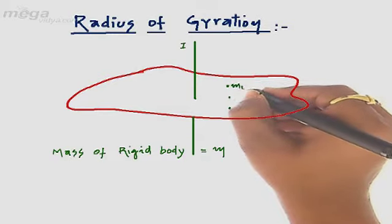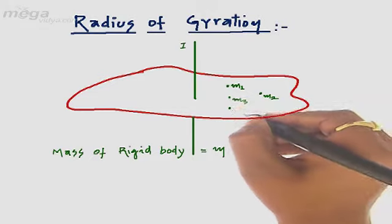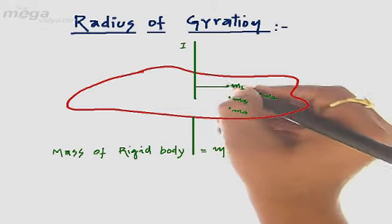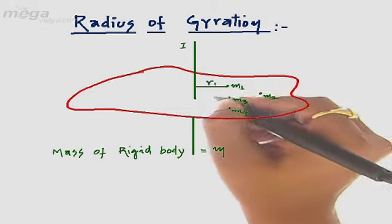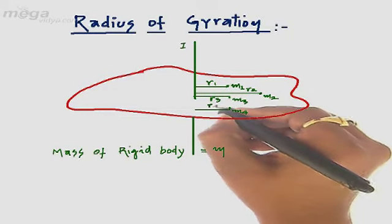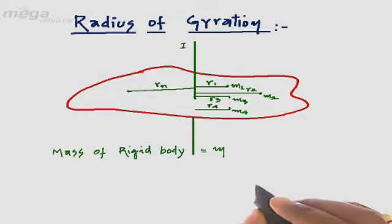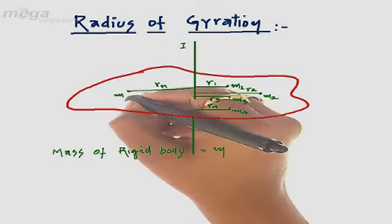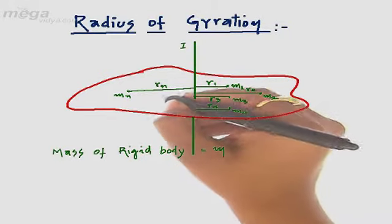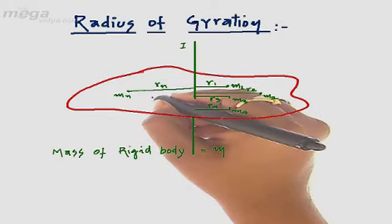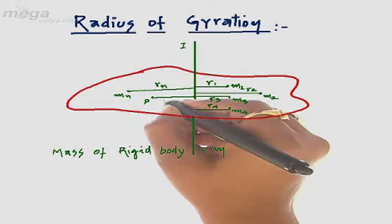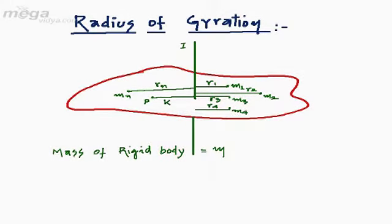Let their masses be m1, m2, m3, m4, and having distances r1, r2, r3, r4, up to rn respectively from the axis. Let us consider that the center of mass of this rigid body is at point P, and its distance from the axis of rotation is k.